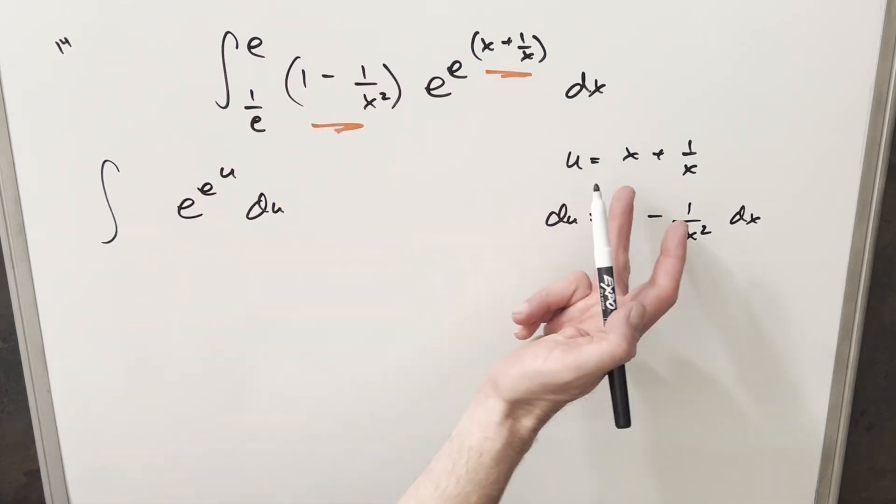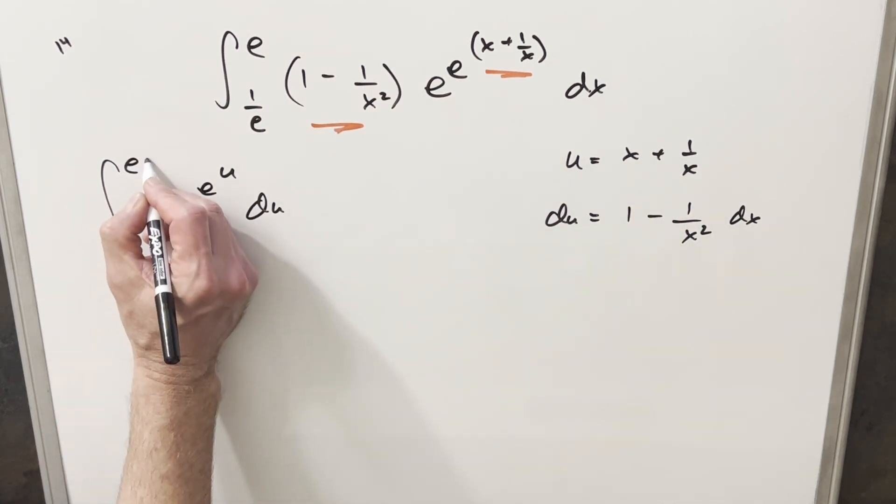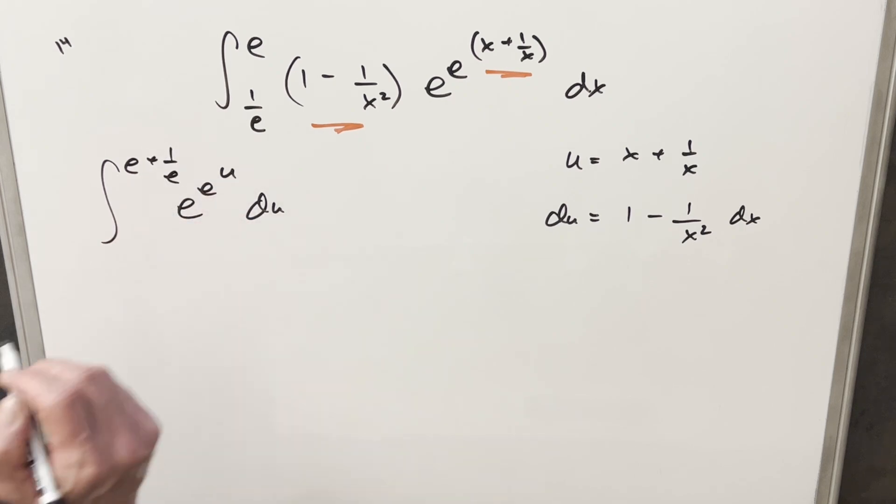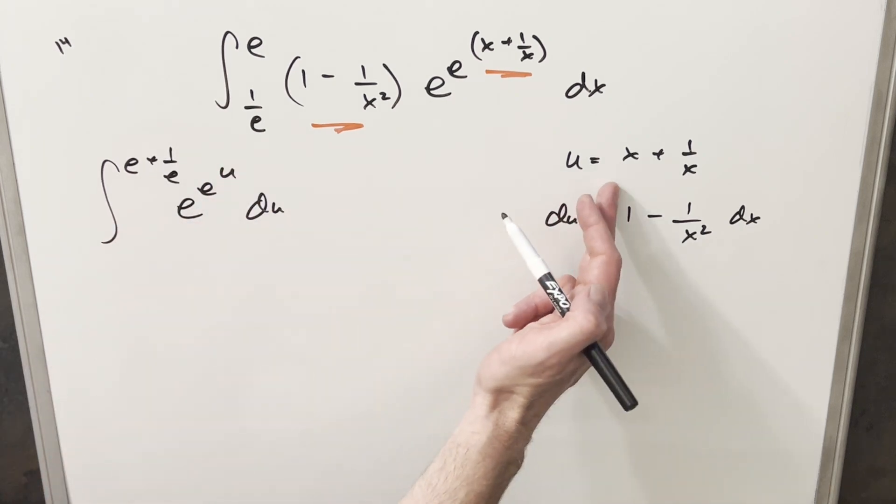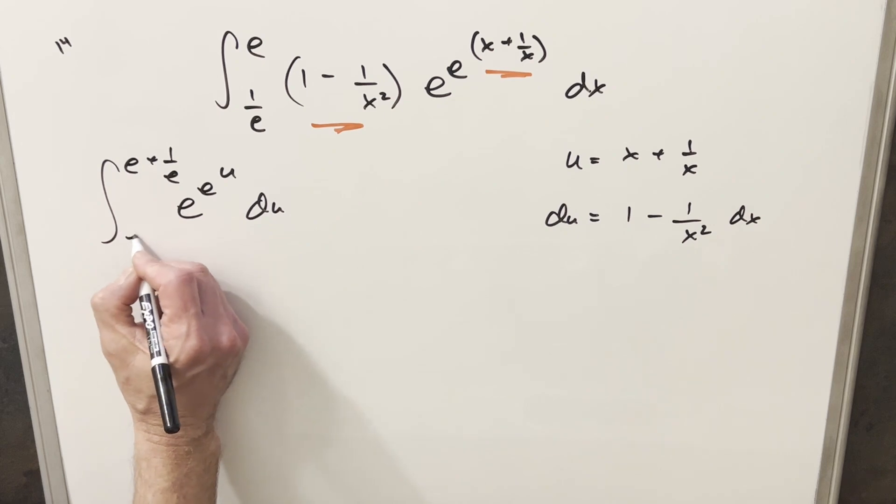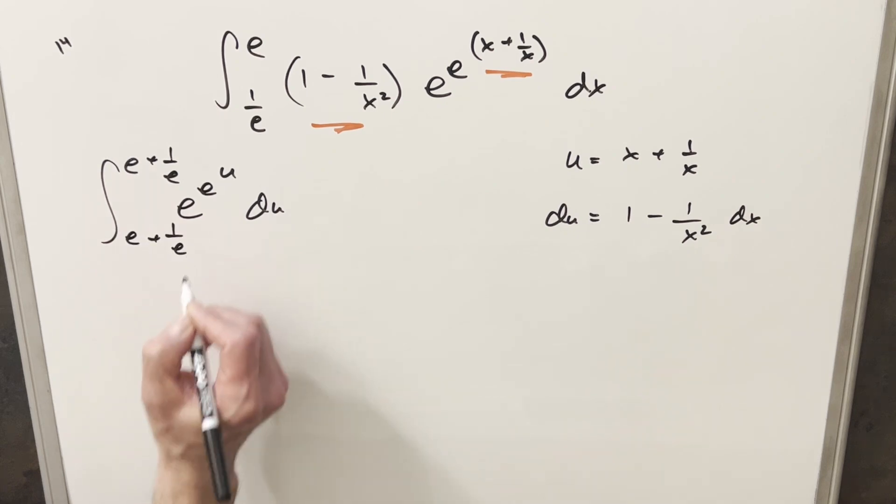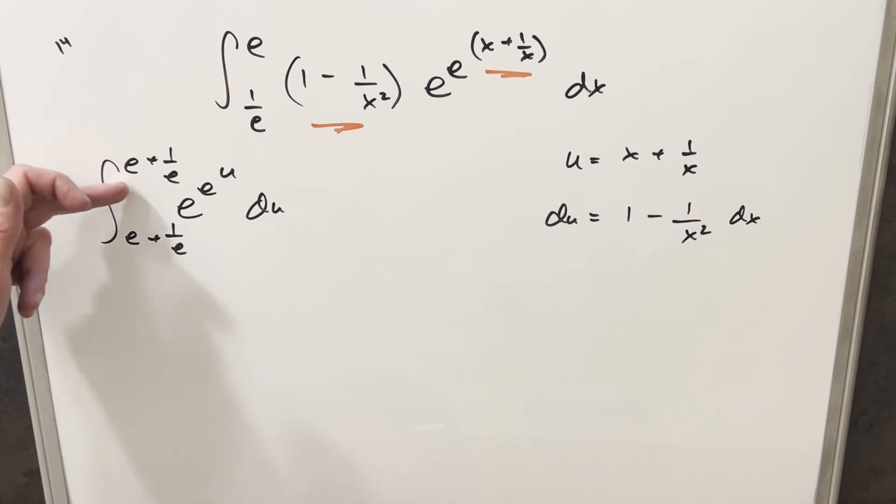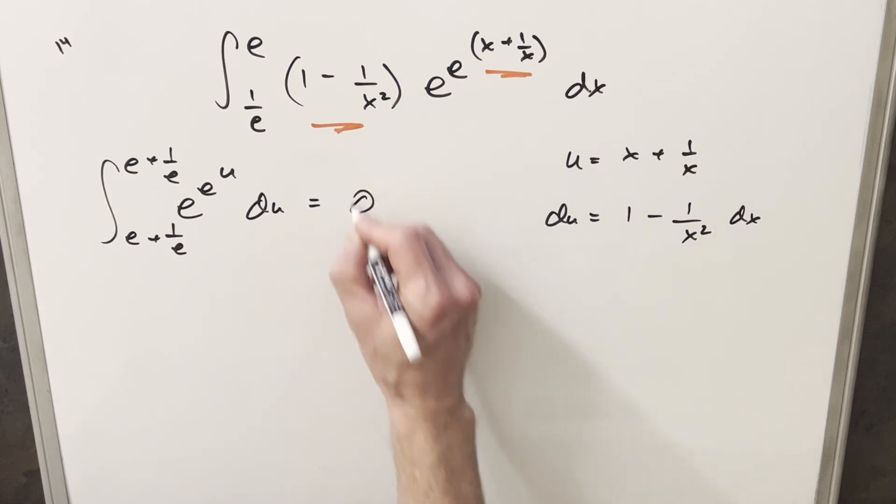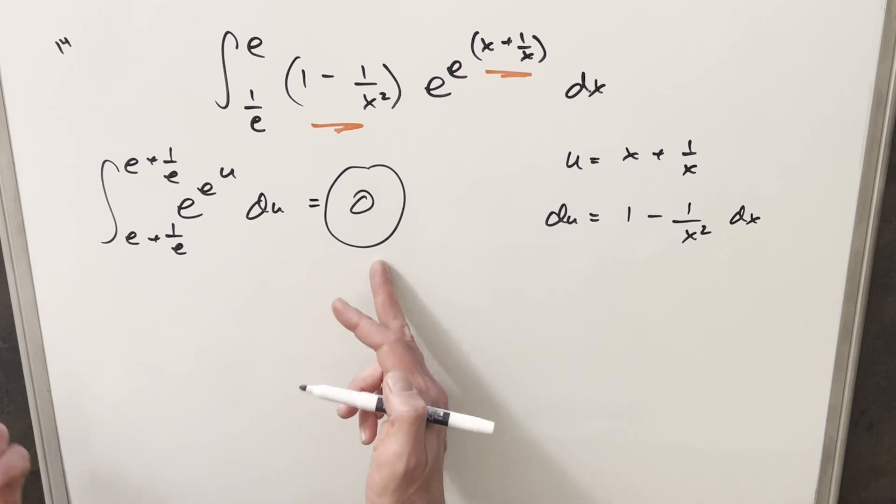Then I'll update the bounds. We plug in e here, this is going to become e plus 1 over e. And then we plug in 1 over e here. It's in a different order, but this is still going to come out to e plus 1 over e. But then from here, you'll notice our lower bound is exactly the same as our upper bound. We have this principle of the definite integral that when our bounds are the same, the integral is just zero. And this is actually the same solution I got in the video, and this is the same solution that MIT has: zero.